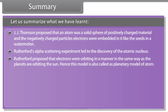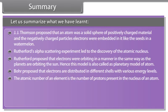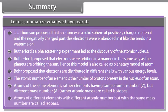Summary. Let us summarize what we have learned. J.J. Thompson proposed that an atom was a solid sphere of positively charged material and the negatively charged particles electrons were embedded in it like the seeds in a watermelon. Rutherford's alpha scattering experiment led to the discovery of the atomic nucleus. Rutherford proposed that electrons were orbiting in a manner in the same way as the planets are orbiting the sun. Hence, this model is also called as planetary model of atom. Bohr proposed that electrons are distributed in different shells with various energy levels. The atomic number of an element is the number of protons present in the nucleus of an atom. Atoms of the same element having same atomic number Z but different mass number A are called isotopes. Atoms of different elements with different atomic number but with the same mass number are called isobars.